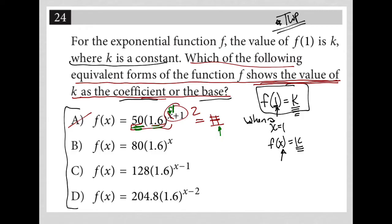Choice B: if I place a 1 in for x, 80 times 1.6 is going to give me something other than 80 — it's not going to equal 80 and it's not going to equal 1.6. So B is eliminated.